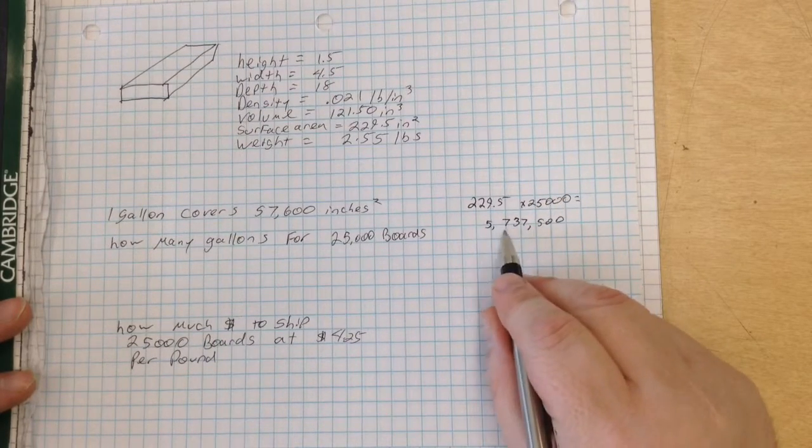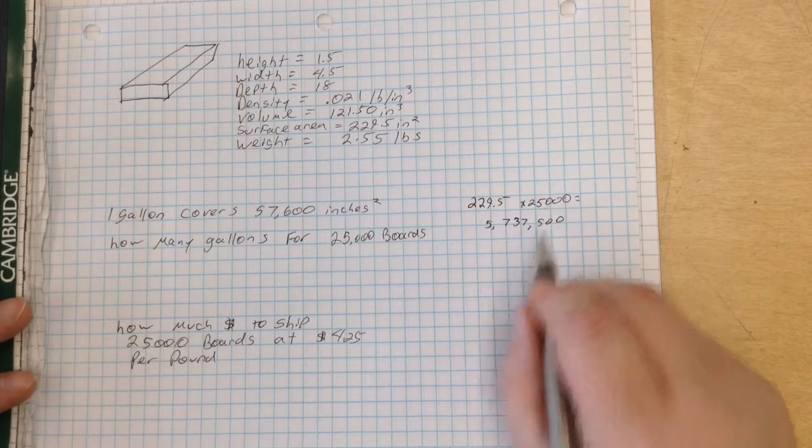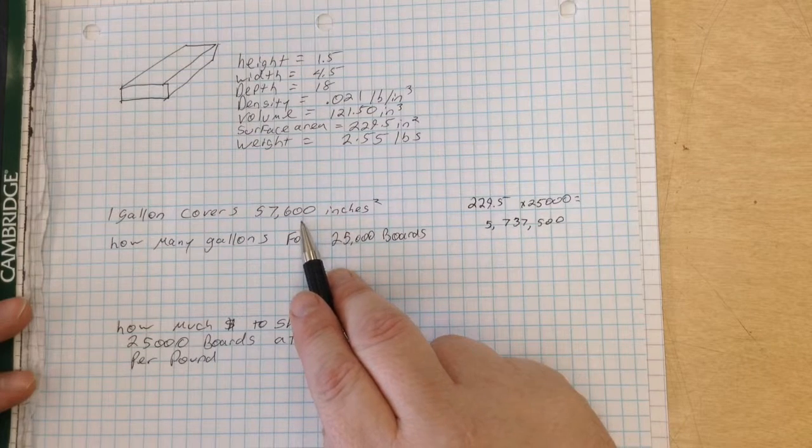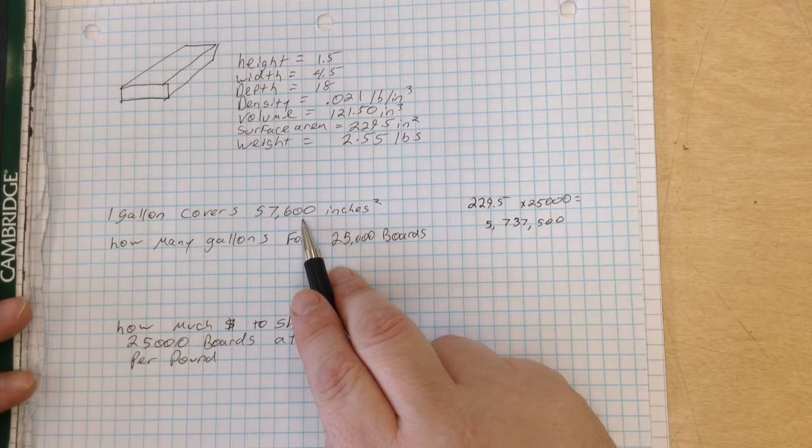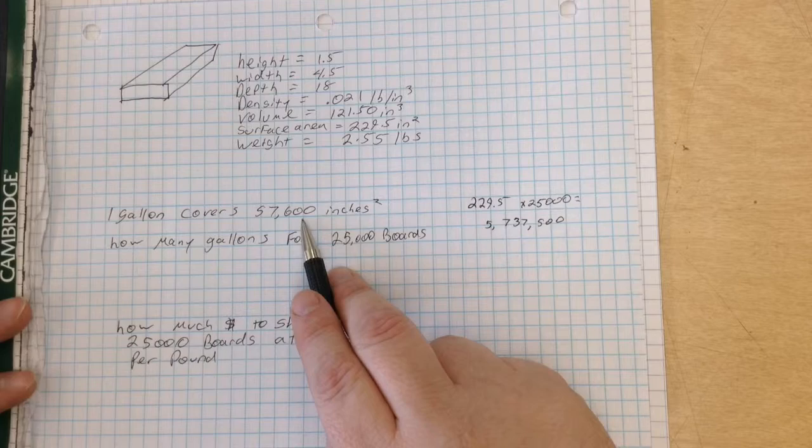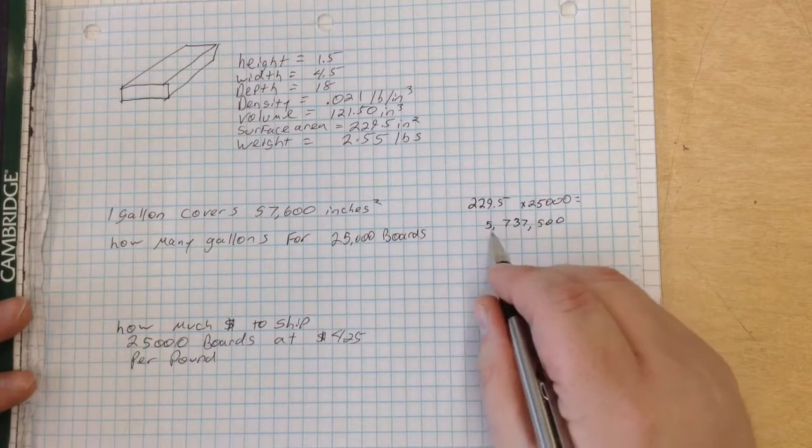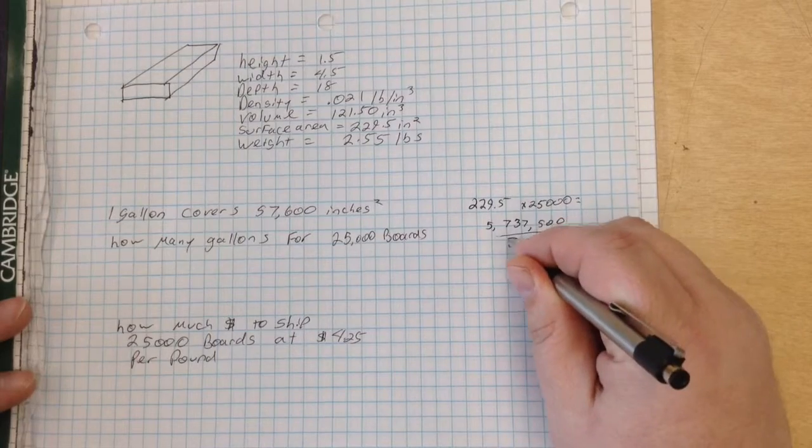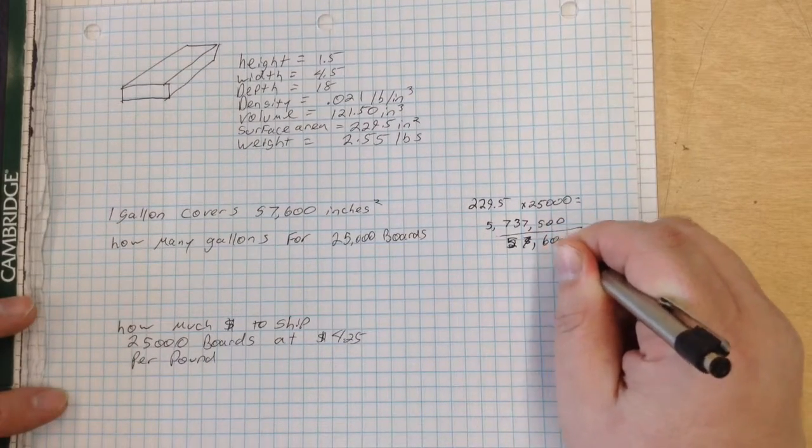now that we know how many square inches are in the surface area of 25,000 boards, we have to divide that by 57,600, because that's how many square inches one gallon covers. So that divided by 57,600.